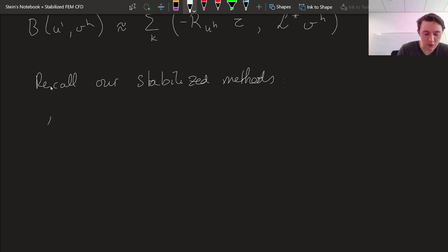Well the one that we talked about most was the SUPG method. Streamline Upwind Petrov-Galerkin as the sum over elements of the residual times a stability parameter times a dot gradient vh.